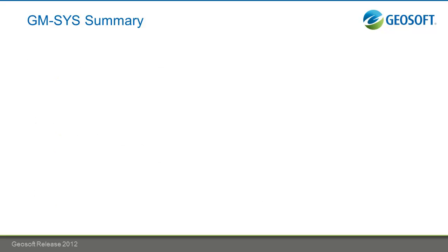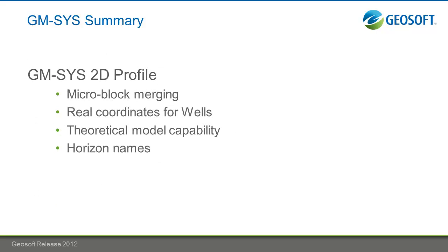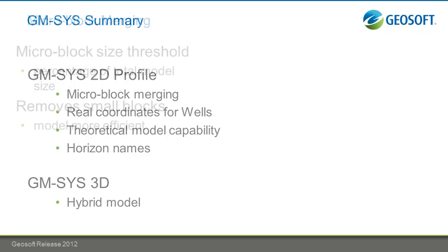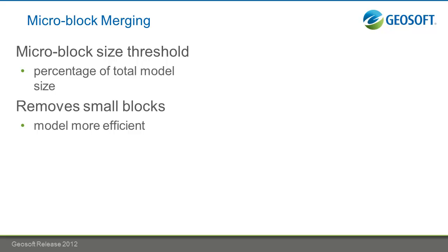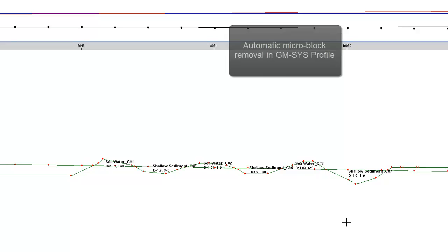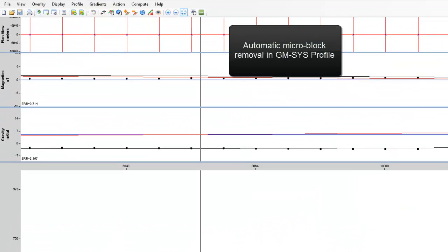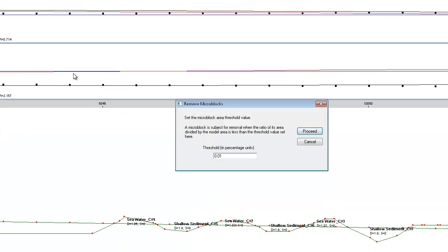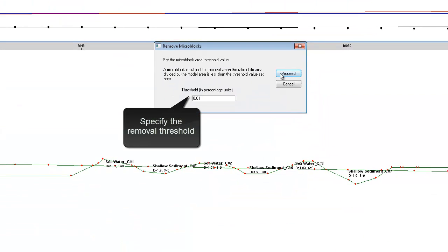We've added a couple of new features to GM-SYS 2D profile, and we've also added an exciting new hybrid model to GM-SYS 3D profile. For those of you working in GM-SYS, when importing horizons — horizons being the layers dividing the blocks — you sometimes have overlapping horizons that create micro-blocks. These micro-blocks cause certain complications in your dataset and can be quite tedious to remove manually. GeoSoft has added the feature of merging your micro-blocks, so you can set a threshold for the percentage of the model size that eliminates blocks smaller than that percentage.